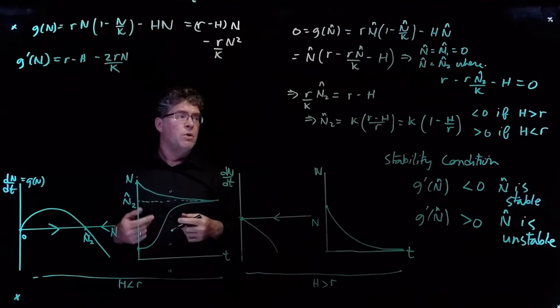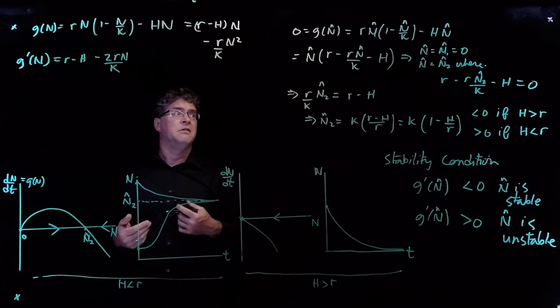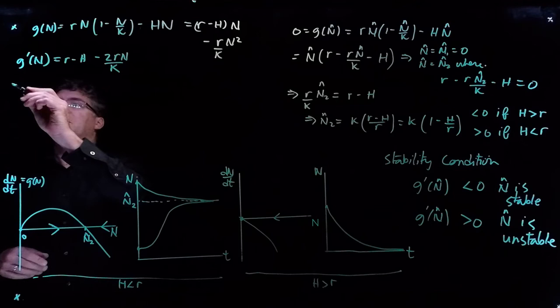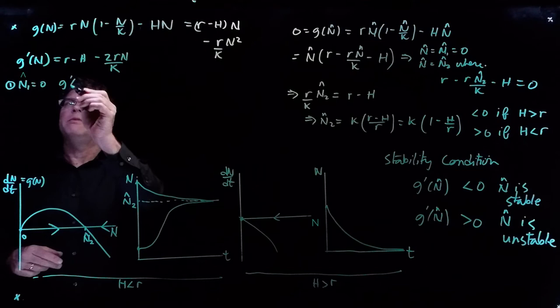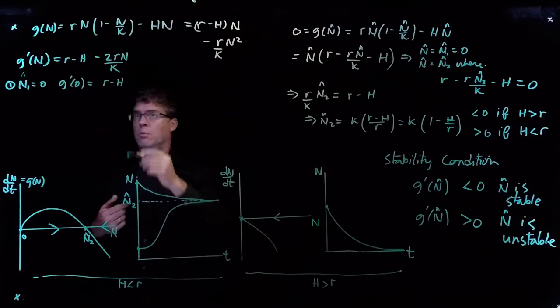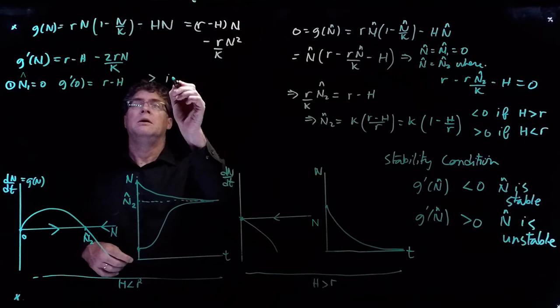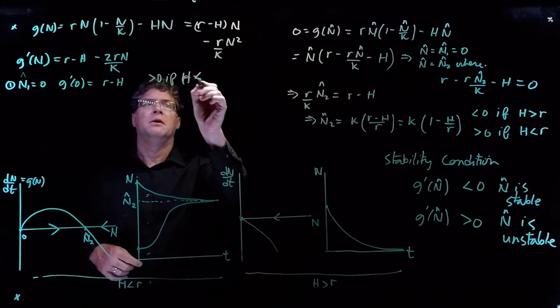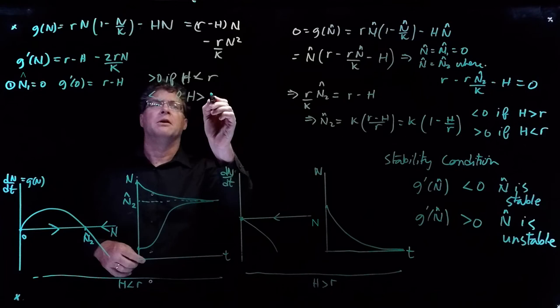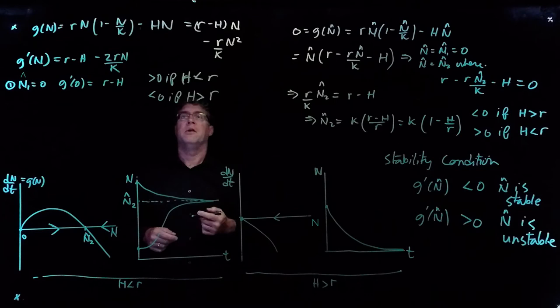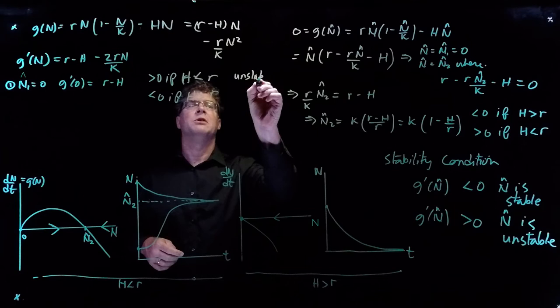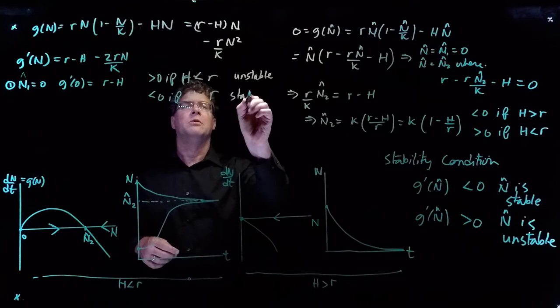For the stability condition, we substitute in the values of n-hat. Consider n1-hat equals zero: g-prime of zero equals r minus h, since the second term vanishes. This is greater than zero if h is less than r, and less than zero if h is greater than r. So when h is less than r, the zero equilibrium is unstable; when h is greater than r, it is stable.